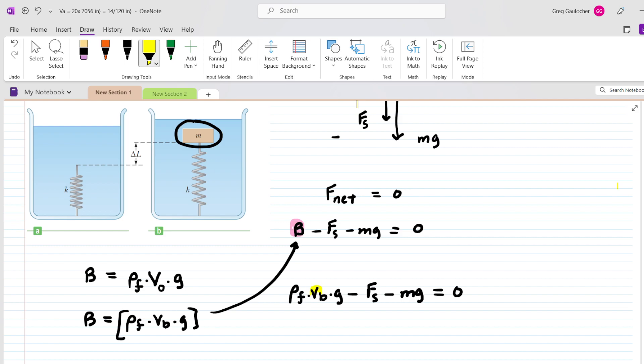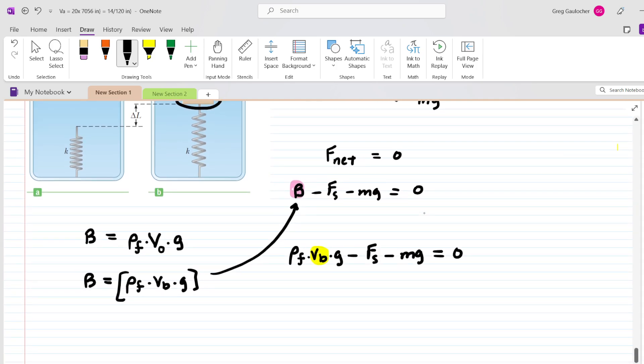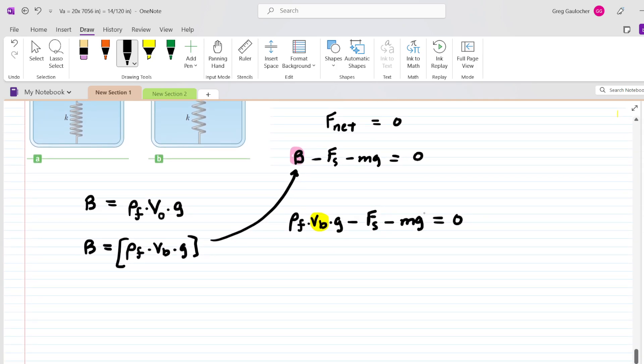Next, we're going to create an expression for the volume of the block, which was not directly given to us. But perhaps on the side here, we can discuss a relationship between volume, mass, and density. We all know that the density of the block would equal the mass of the block divided by the volume of the block.